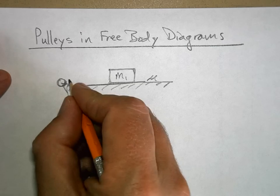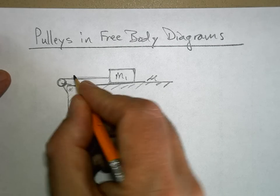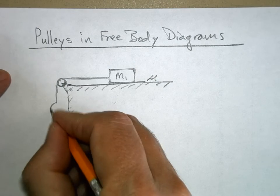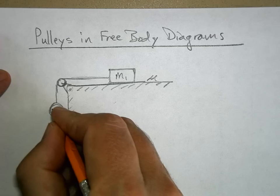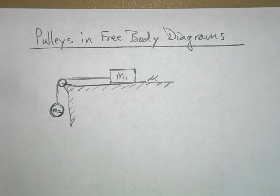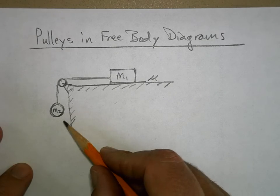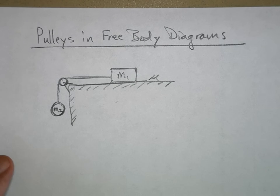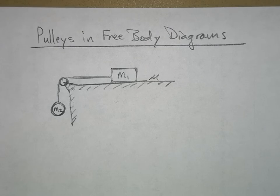And then we have a pulley right here, so you got a string that goes like this and maybe this is m2. And you may have a question where it says what is the acceleration of the system, or maybe they give you the acceleration and you have to solve for one of the masses or you have to solve for the coefficient of friction.